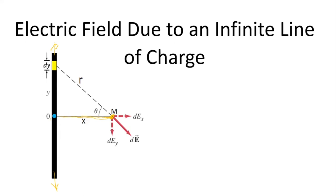Now to calculate the electric field of an infinite line of charge, first we are going to take an element of charge. Let's consider this wire is charged positively. We take an element of charge. This element of charge will create an element of electric field. We pass the line from the element of charge to point M where we calculate the electric field, and this electric field dE will be away from the charge.